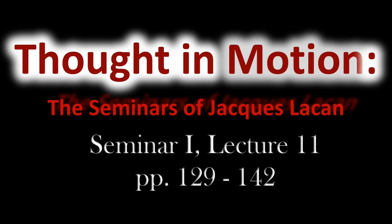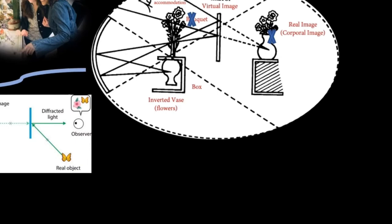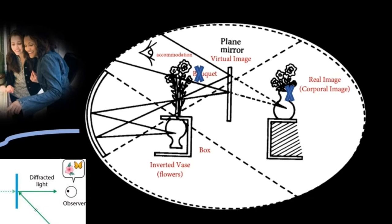If you enjoy this video, please like it and consider subscribing to my channel. In Lecture 11, Lacan returns to the optical schema. This model shouldn't be taken literally. It offers a metaphor for thinking of the relationships between the symbolic, imaginary, and real. We first will focus on the plane mirror, which Lacan this time likens to a pane of glass.